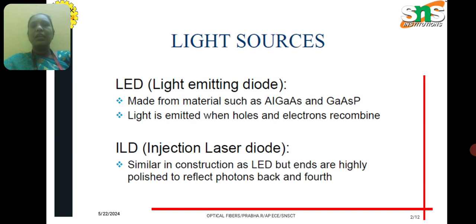LED is made from a material such as Aluminium Gallium Arsenide or Gallium Arsenide Phosphorus. Light is emitted from the LED when holes and electrons are recombined.